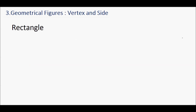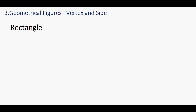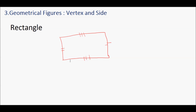Now let's move to geometrical figures. In geometrical figures we will learn about a rectangle. Two horizontal lines and two vertical lines make a rectangle, where opposite lines are of the same length. Wherever two lines meet, it is called a vertex. I'm going to name this rectangle A, B, C, and D.